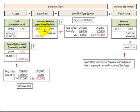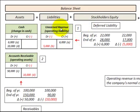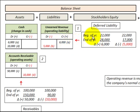Let's look at the first case: unearned revenue, also called a deferred liability. This is where our customer pays us cash before we provide any service or product. We receive the cash upfront. In this case, we increase our unearned revenue — say the beginning-of-year balance was $22,000 and the end-of-year balance was $28,000, so we had a $6,000 increase, meaning we received $6,000 from our customer upfront.